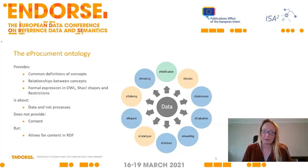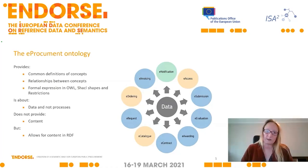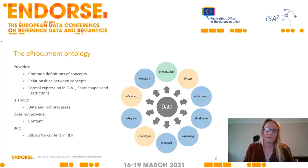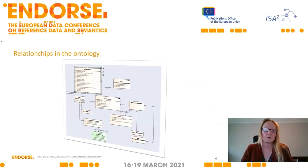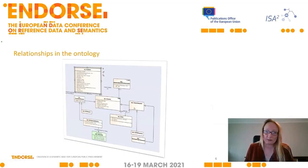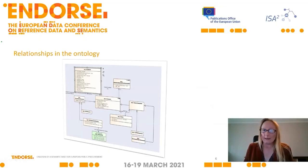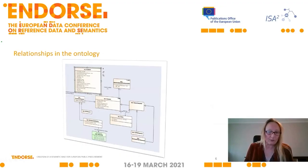We've actually done that with the TED notices — five years of TED notices. We took a sample of contract notice and contract award notice and transformed them into RDF so that they can be linked amongst one another and the information retrieved. To show you briefly what the conceptual model looks like: you have a procedure, a document which is related to the procedure, and different types of documents — tender documents, procurement documents. Within the model you can find the definition of each term. A document has a dispatch date and an ID. A procurement document inherits everything that is in a document, so you don't need to replicate those attributes.